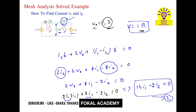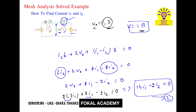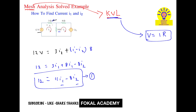Now equation 2 and equation 1 are both in terms of I1 and I2. We can easily find I1 and I2. From equation 2, there are no constant values, so we get the I1-I2 relation: 14I1 equals 2I2, which means I2 equals 7I1.